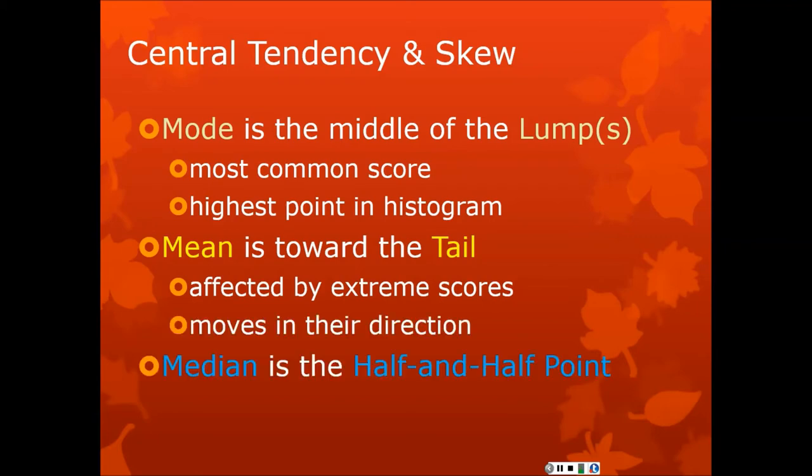And the median is a half and half point. So if you imagine that your histogram is just made up of tons of blocks stacked on each other, just half the blocks on one side, half the blocks on the other. So mean-median-mode is the order those things are going to come in in a negatively skewed distribution. And mode-median-mean is the direction for a positively skewed distribution.